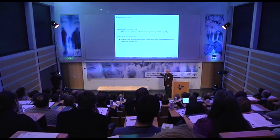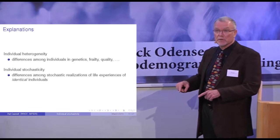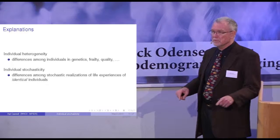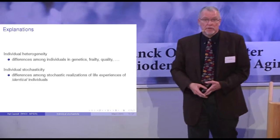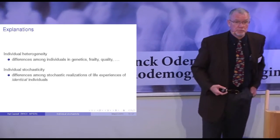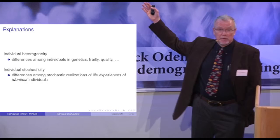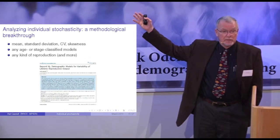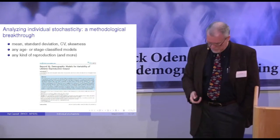The other group that's worked on this the most — Uli Steiner, who's now here as part of this institute, and Sripad Tuljapurkar at Stanford — call this dynamic heterogeneity. Same thing, different names.